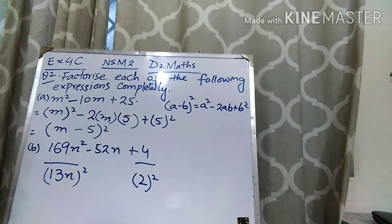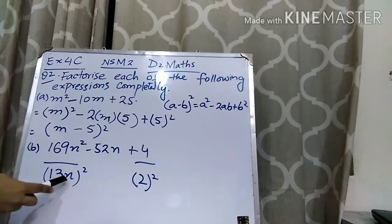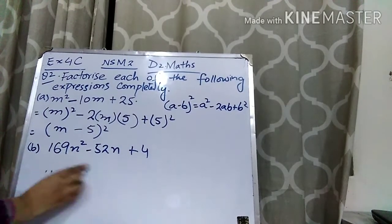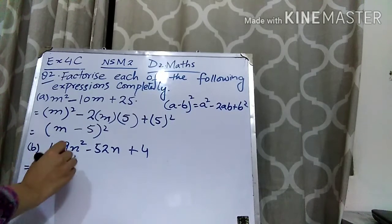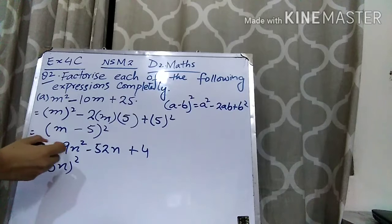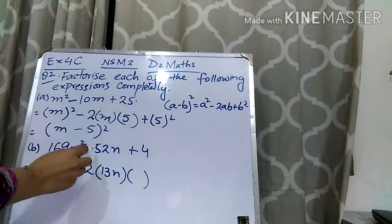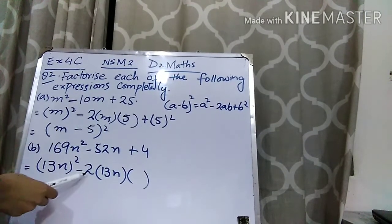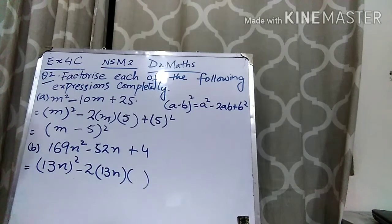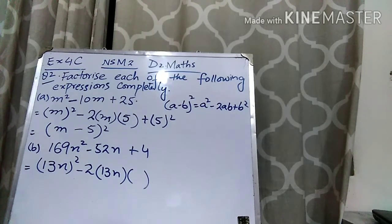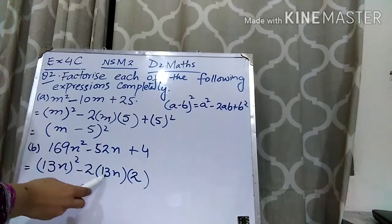So we are going to use this formula. Now we are going to apply the formula. In place of 169N squared, we can write 13N whole squared — this is A. A squared minus 2AB. Now, what should B be to get 52N? When you multiply 2 with 13, you get 26. And when you multiply 26 with 2, you get 52. So B is 2, and 2 multiplied by 13 multiplied by 2 is 52.